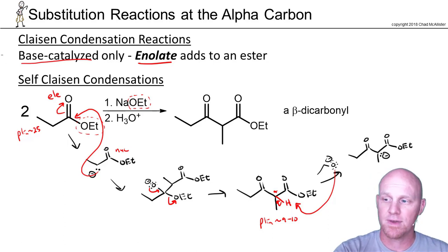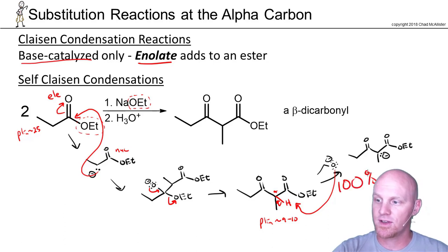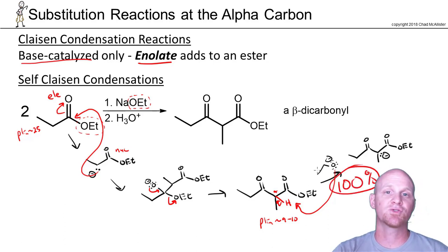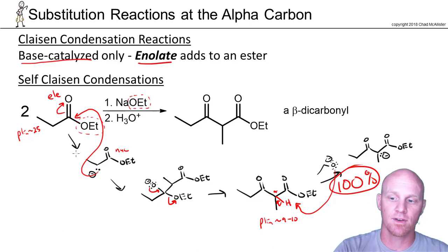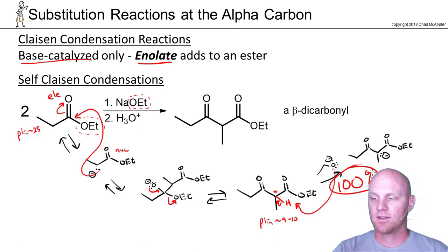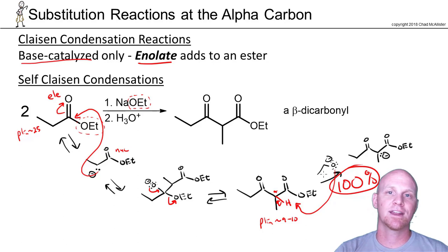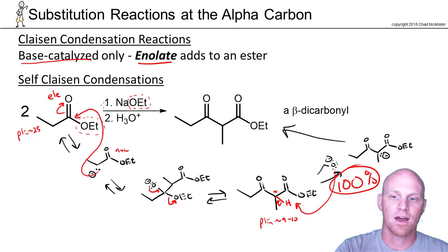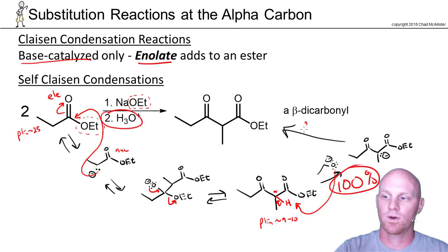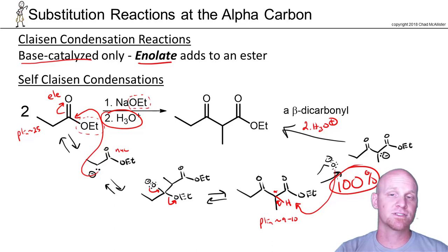The big key here is that this deprotonation step happens virtually 100%, and that's really really important. All the other steps are probably in equilibrium, so it is this one step — because it proceeds at virtually 100% conversion — that allows us to get a great yield in this reaction. The last step is just the acid workup where we add H3O+ to reprotonate. It is this last step in the mechanism with its 100% conversion that allows us to get a good yield for Claisen condensation reactions.